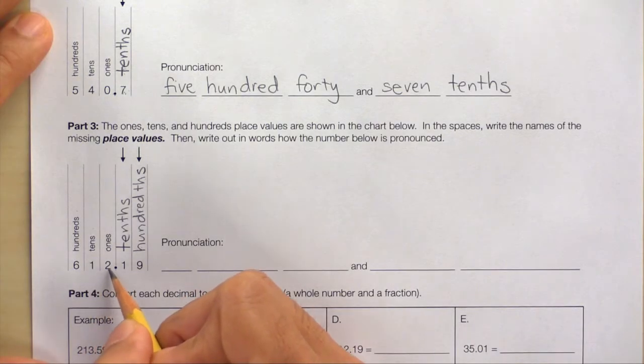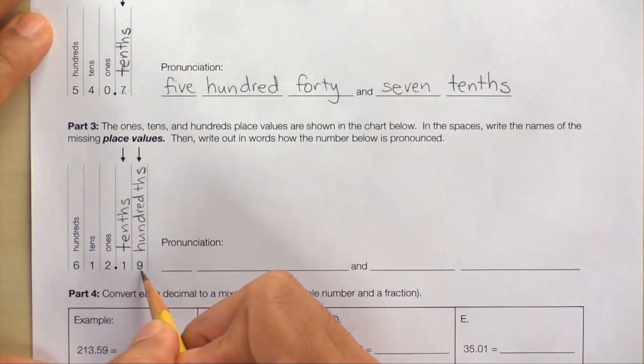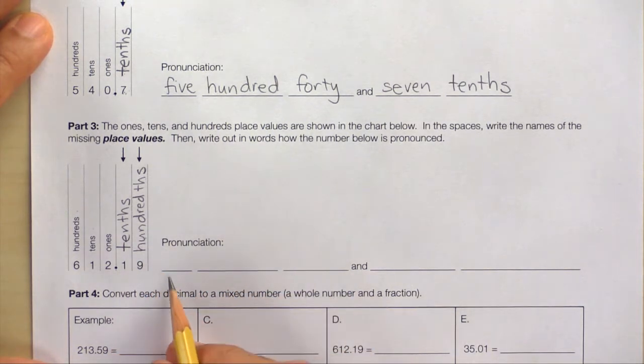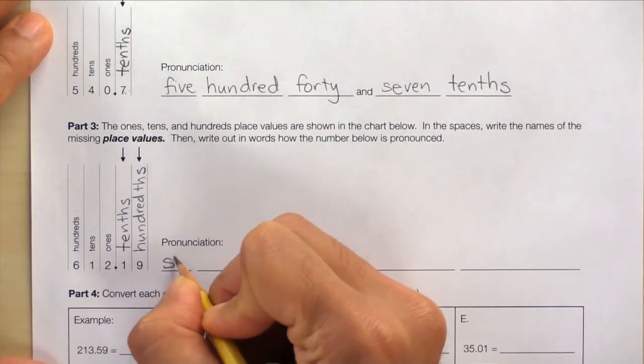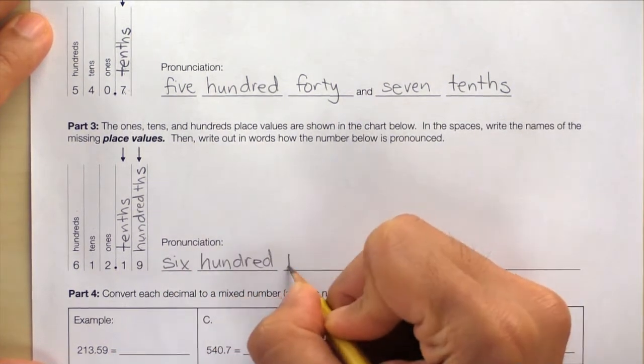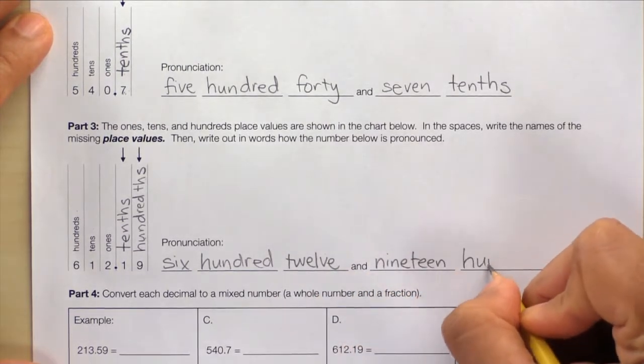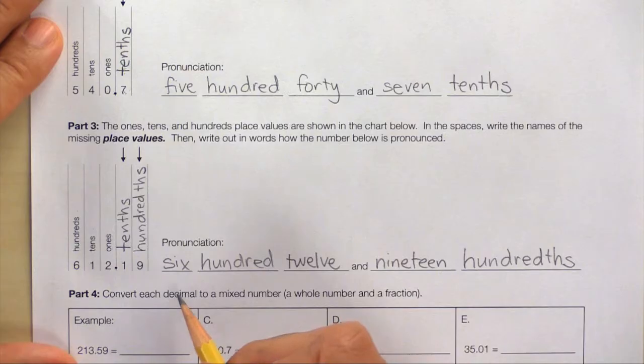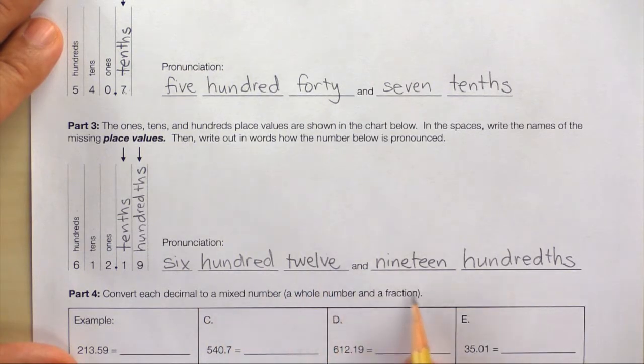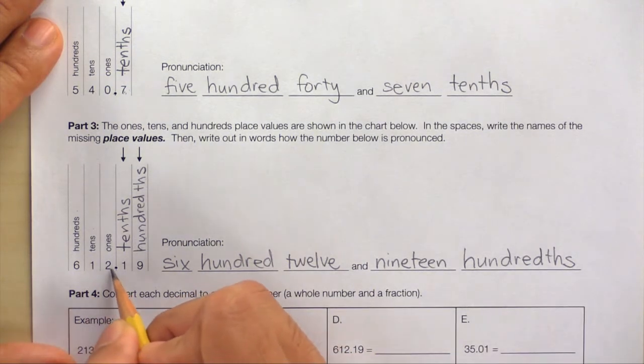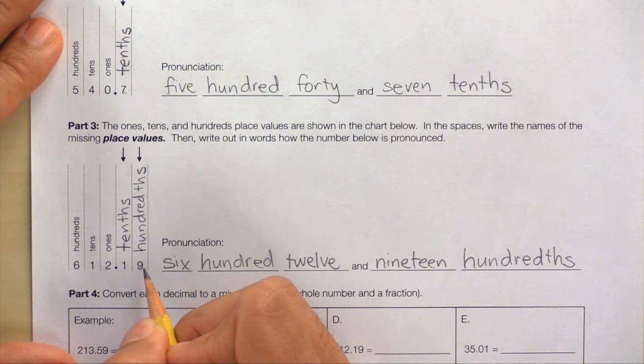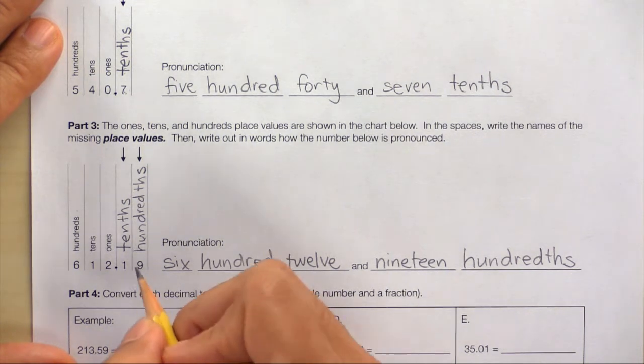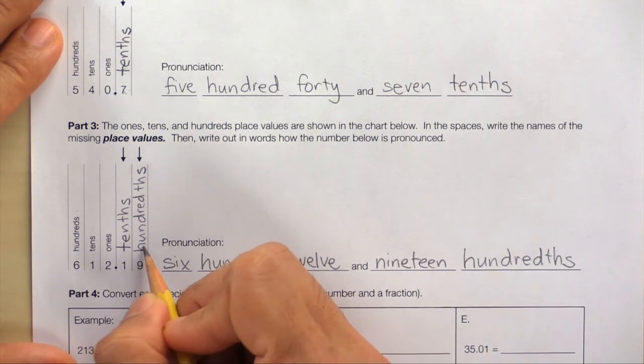Now let's write down the pronunciation of the number. Here we have 612 and 19 hundredths. So we'll write down 612 and 19 hundredths. Let's take one more look at the pronunciation. 612 and 19 hundredths. And we say hundredths at the end of this number because the last digit is in the hundredths place value.